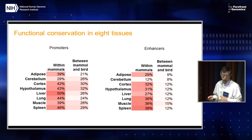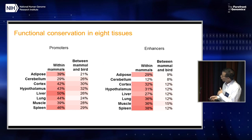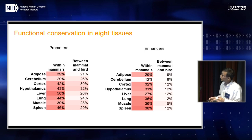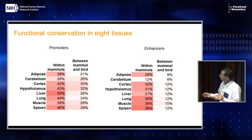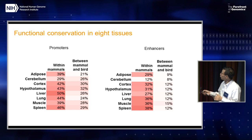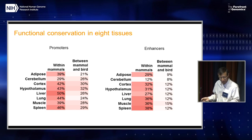When we look across all eight tissues, you can see that within mammals the conservation is higher than between mammal and birds, but also between promoter and enhancer, functional conservation is significantly reduced for enhancers.